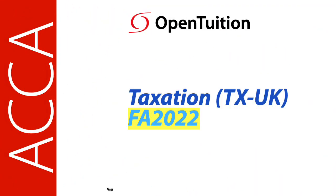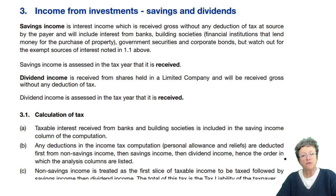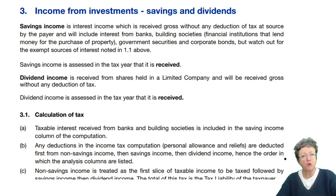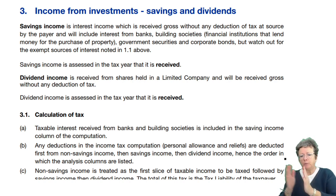This is a lecture from Open Tuition. To benefit from the lecture, you should download the free lecture notes from opentuition.com. Section 3 — we're going to look at savings income and dividend income, which will form part of our main pro forma in one of those columns.